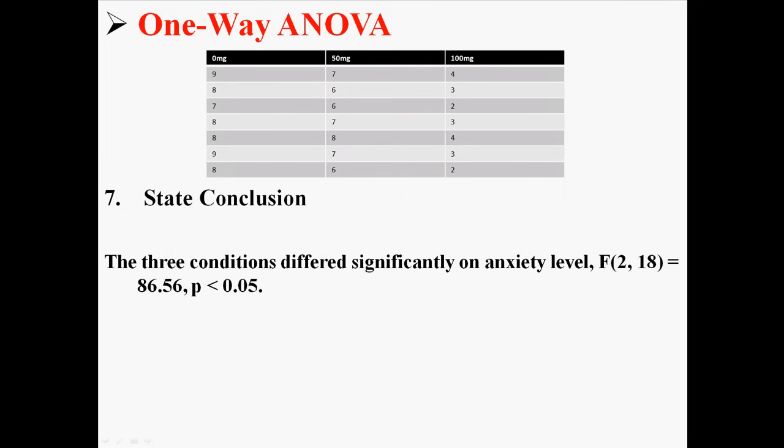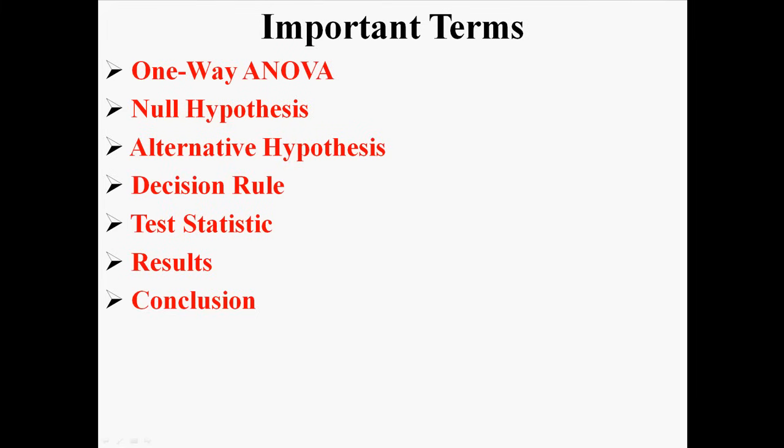Now we just know that the groups are different somehow. We don't know where they're different. To actually figure that out, we would have to do a post-hoc test. But from this one-way ANOVA, we did discover that there is a difference somewhere among these three groups. And that is a one-way ANOVA.